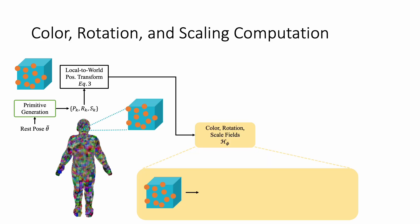After that, we can use the world coordinate of each 3D Gaussian to query its color, scaling, and rotation from the neural implicit fields.